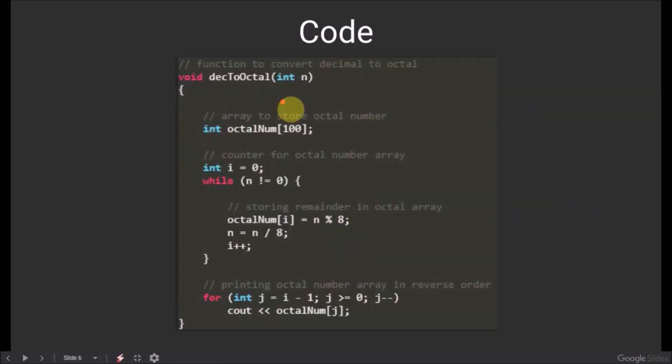In the function decimalToOctal, we have passed a decimal number and it prints its octal equivalent. octalNum is an array to store the octal number. We initialize the counter i with 0.